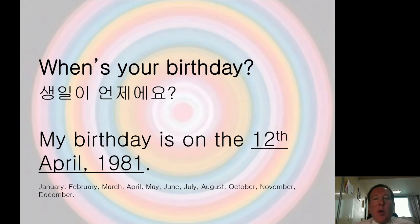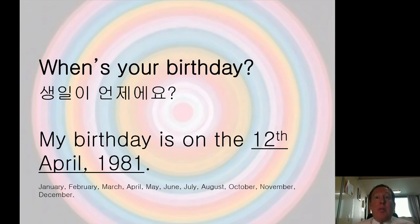You can remember the months song from kindergarten: January, February, March, April, May, June, July... So my birthday is on the 12th of April, and then the year. I'm 38 years old, so I was born in 1981. You are usually freshmen, so you are probably 19 or 20 years old — born in 2000, 2001, or maybe 1999. My birthday is on the 12th of April 1981.